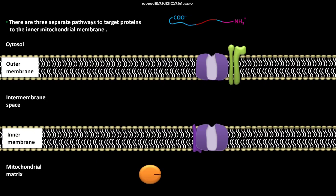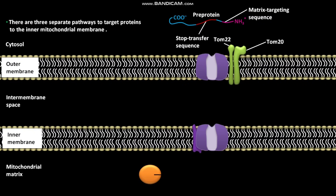Before discussing path A, let us discuss the receptors, channels, and the pre-protein involved. A pre-protein having an N-terminal matrix targeting sequence and a stop-transfer sequence is present in the cytosol. The outer membrane of mitochondrion has TOM20 and TOM22 import receptors, and a TOM40 general import pore. The inner membrane has TM44 protein and TM23 and TM17 channel.